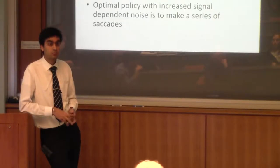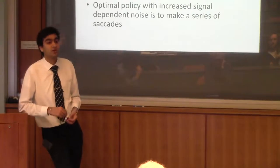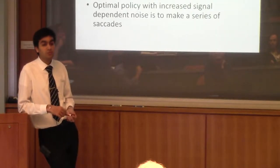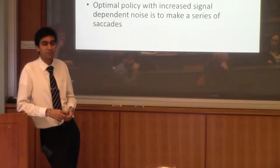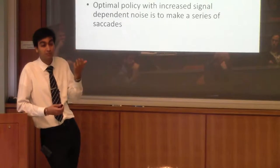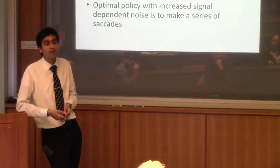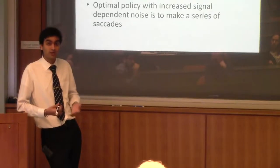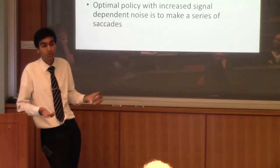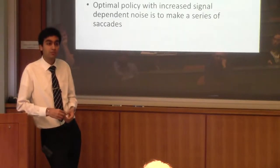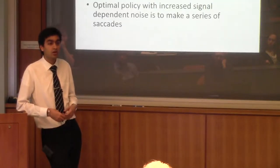Question about blinking: blinking serves in part to hydrate the cornea, which is not well vascularized — having blood vessels across the cornea would impair vision. Without regular blinking, the consequence is corneal abrasions, which is what happens with dry eye conditions.